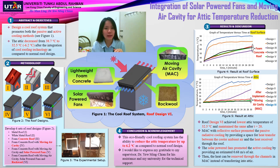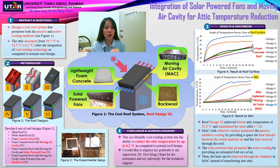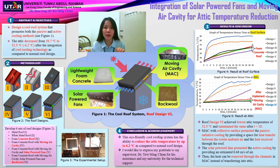At the attic, after the moving air cavity is implemented in roof designs 4, 5, and 6, the temperature recorded is lower and steadier. Roof design 6, the black color temperature line graph, achieves the lowest attic temperature of 32.5 degrees Celsius and maintains the same after 20 minutes. This means roof design 6 is the best among all the roof designs in keeping the attic cool even after 30 minutes of heat exposure.